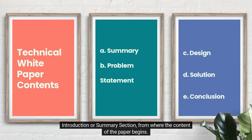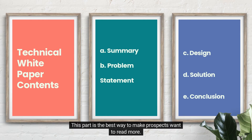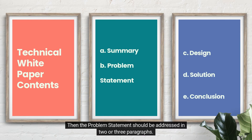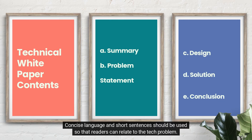Next is the introduction or summary section, from where the content of the paper begins. The introduction should be one paragraph and not more than 100 words. It must contain a brief summary about why the paper has been written and a short description of the problem and its potential solutions. This part is the best way to make prospects want to read more — it should be presented as a teaser of the paper. Then the problem statement should be addressed in two or three paragraphs, using concise language and short sentences so that readers can relate to the tech problem.